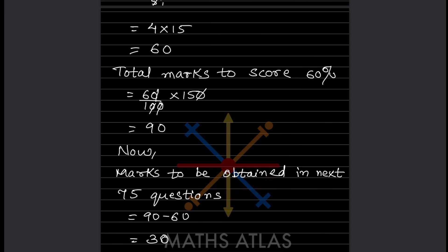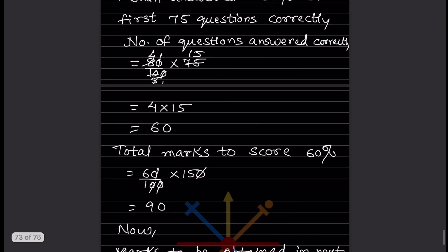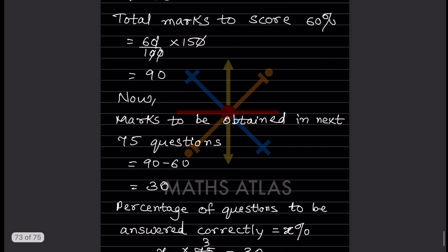Now we have to find the marks to be obtained in the next 75 questions. The total marks needed to score 60% is 90, and he already answered 60 correctly. So: 90 minus 60 equals 30. Marks to be obtained in the next 75 questions is 30.